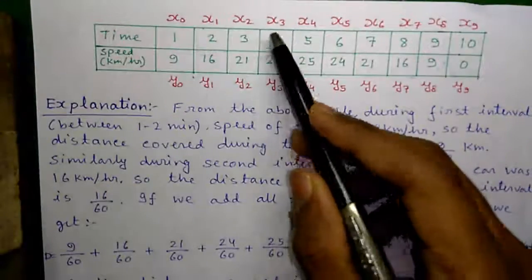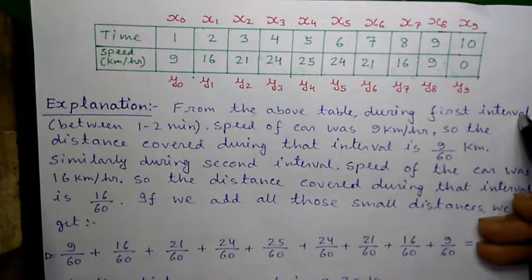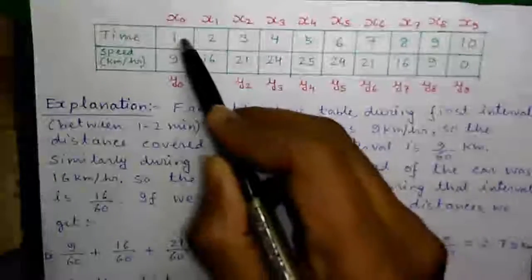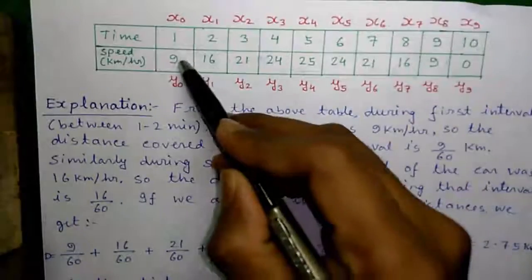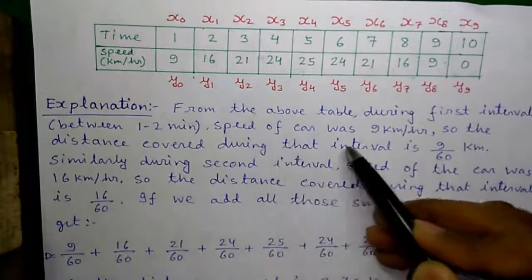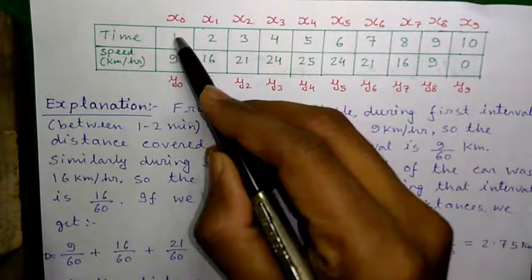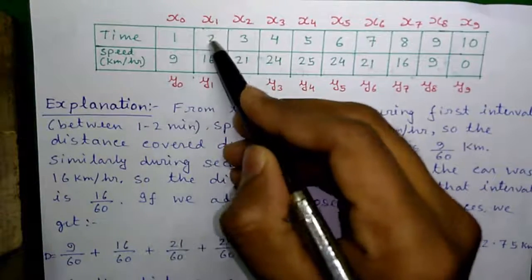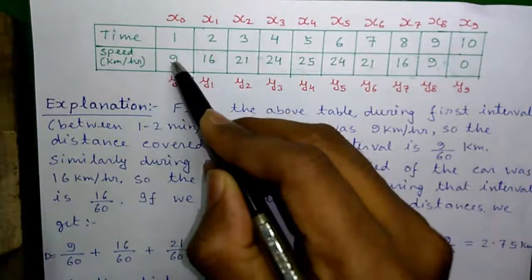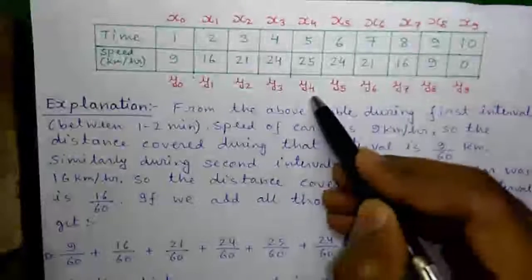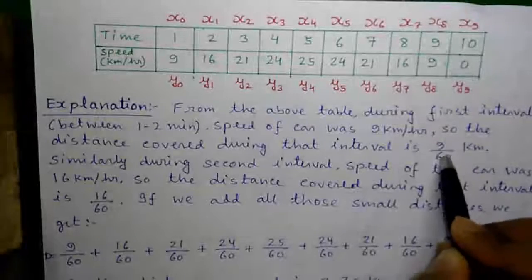Now some explanation. From the table, during the first interval — that is between 1 to 2 minutes — the speed of the car was 9 km per hour. So the distance covered during that interval is 9 by 60 km, because at the first minute speed was 9 km per hour and at the second minute speed changed to 16 km per hour, but during that 1 minute speed was 9 km per hour. So in 60 minutes it covers 9 km, meaning in 1 minute it covers 9 by 60 km, which is our small distance number 1.